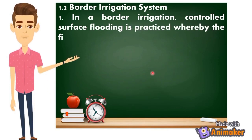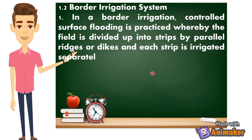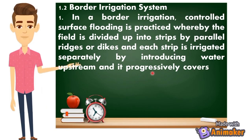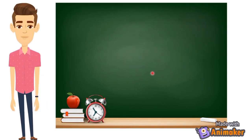Next, 1.2 Border Irrigation System. In border irrigation, controlled surface flooding is practiced whereby the field is divided into strips by parallel ridges or dikes, and each strip is irrigated separately by introducing water upstream which progressively covers the entire strip. Ang border irrigation system, kumbaga subdivided yung places mo, at kailangan na sa flat surface lang sya, ini-irrigate natin each subdivided field.